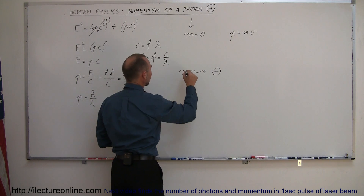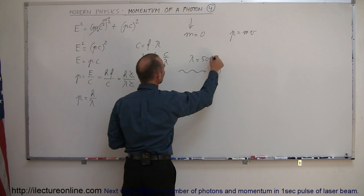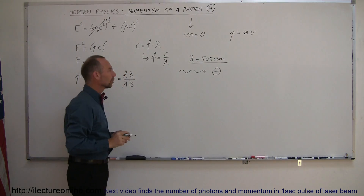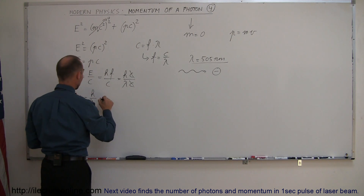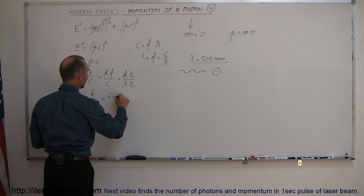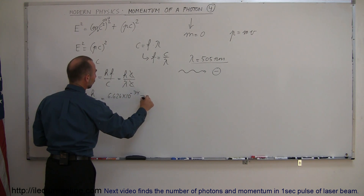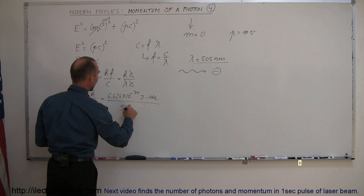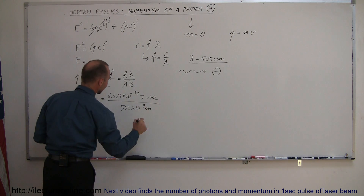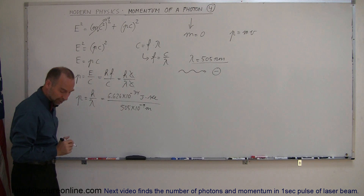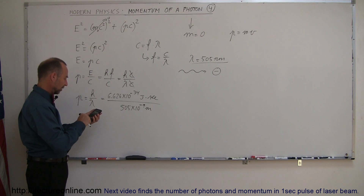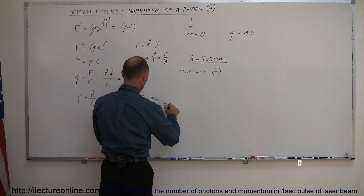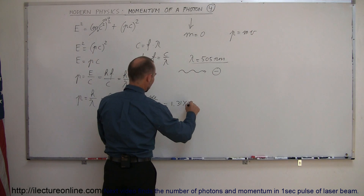Let's say that we have a photon with a wavelength equal to 505 nanometers — that would be kind of yellowish-green light. Plugging that in, the momentum of a single photon would be equal to 6.626 times 10 to the minus 34 joule-seconds, divided by the wavelength of 505 times 10 to the minus 9 meters. Calculating that gives us a momentum of 1.31 times 10 to the minus 27.